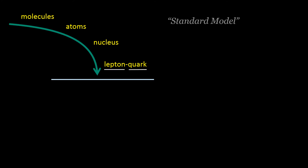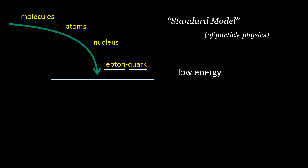This scheme, based on leptons and quarks, is called the standard model of particle physics, and it describes most things we see really well. But in particle physics, all this is thought of as low energy stuff, which implies another high energy domain.